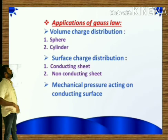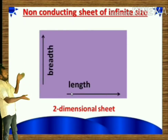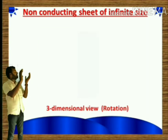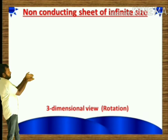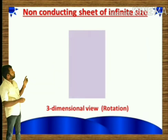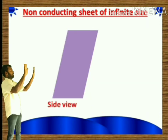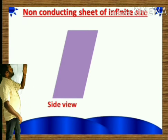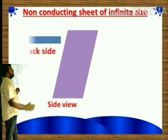This is a two-dimensional sheet. A two-dimensional sheet has only length and breadth — only two dimensions, no third dimension. If I rotate this two-dimensional sheet and observe it perpendicularly, this is the side view. This is the back side and this is the front side.